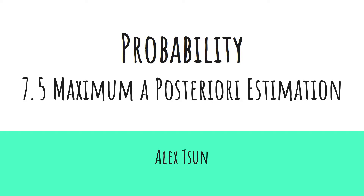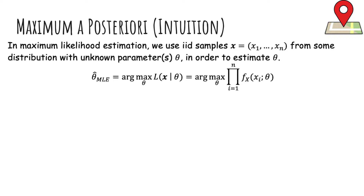In this video we'll talk about maximum a posteriori estimation, which will allow us to include prior beliefs into our estimation. In MLE, we use IID samples x1 through xn from some distribution with unknown parameters theta in order to estimate data. We computed the likelihood — the probability of seeing the data given theta — and chose the theta that maximizes this likelihood or log likelihood.